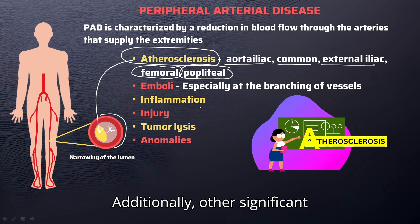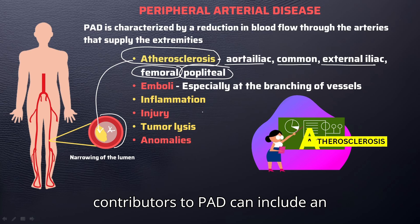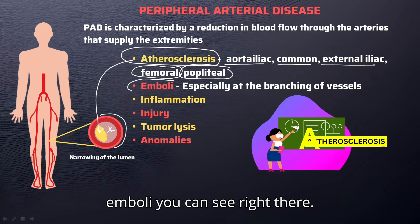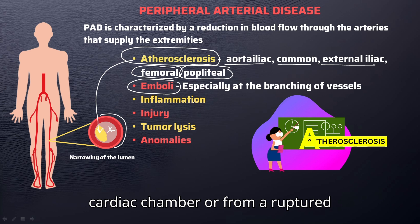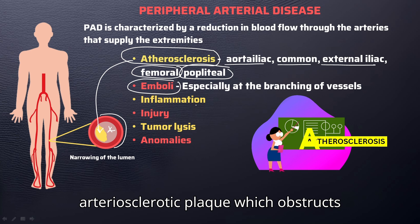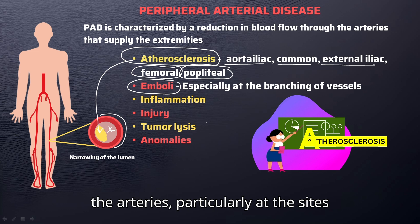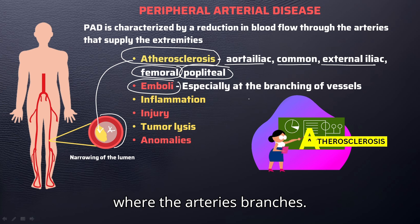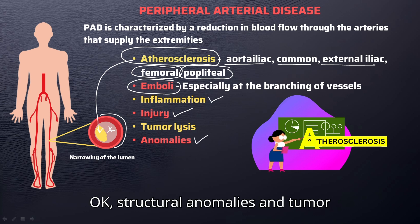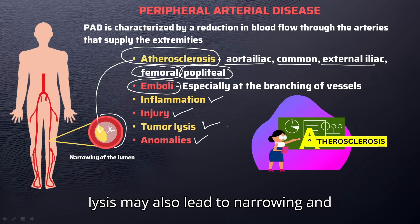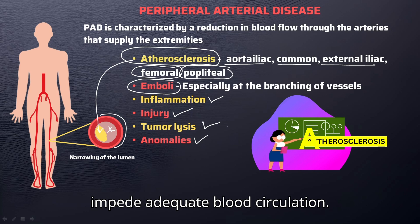Other significant contributors to PAD can include emboli, which may originate from the cardiac chamber or from a ruptured atherosclerotic plaque, obstructing the arteries particularly at the sites where the arteries branch. Moreover, factors such as arterial injuries, inflammations, structural anomalies, and tumor lysis may also lead to narrowing and impede adequate blood circulation.